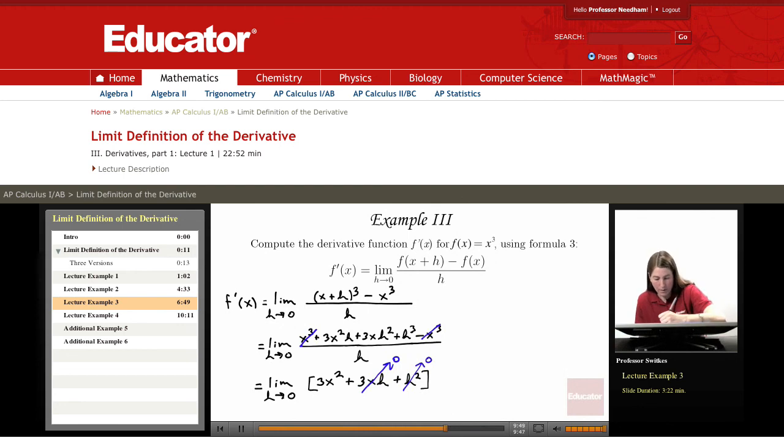And so our result here is 3 x squared. In other words, what we're claiming is that the derivative of x cubed works out to 3 x squared. And that's what we are claiming here as our final result. Okay, so let's look at a fourth example.